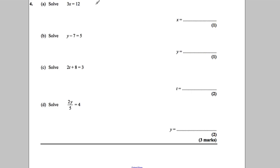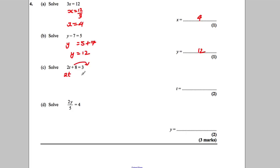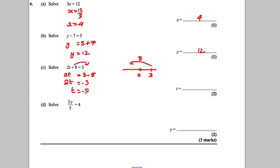3X is 12 — divide both sides by 3. X must be 12 divided by 3. That gives X is 4. Check: 3 times 4 is 12. Next: Y subtract 7 equals 5 — add 7 to both sides. Y is equal to 5 add 7. Y is equal to 12. Check: 12 takeaway 7 is 5. Two steps here: first take away the 8 off both sides. 2T stays where it is. 3 takeaway 8 gives negative 5. So 2T is negative 5. Then divide by 2. T is negative 5 over 2. Absolutely fine to leave your answer like that.